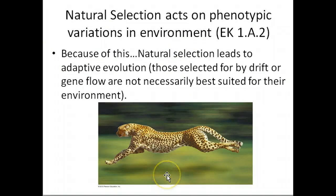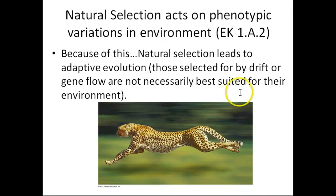Natural selection acts on phenotypic variations in the environment — there's a dynamic interaction between the actual phenotype and natural selection. Mutations spur those initial changes leading to various phenotypes, but it's the phenotype interacting with the environment that natural selection acts on, selecting for or against that phenotype.